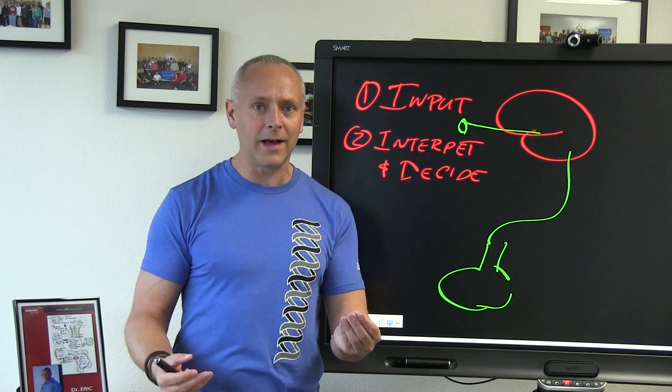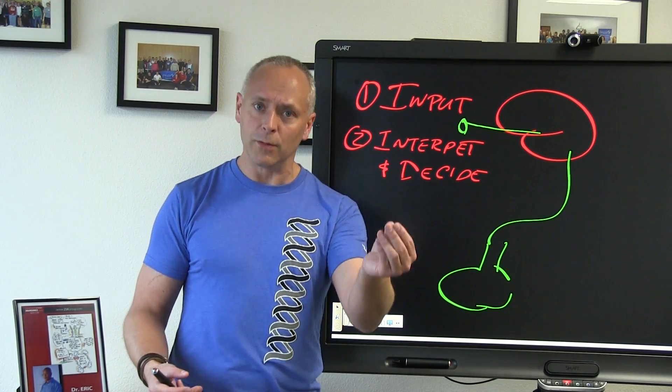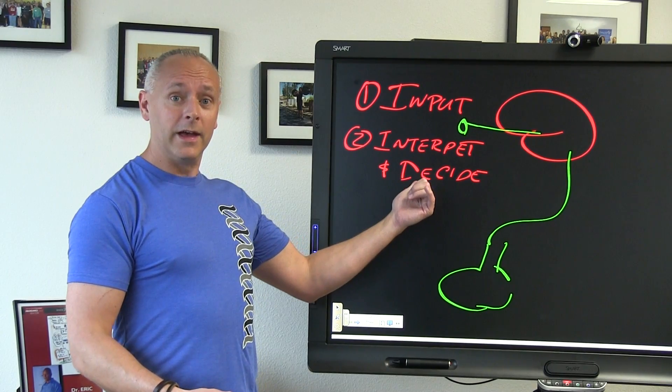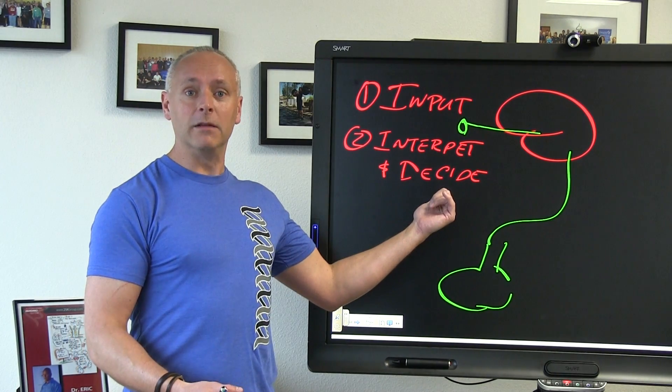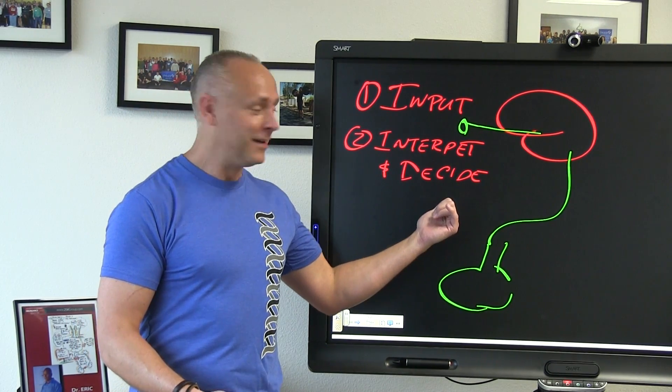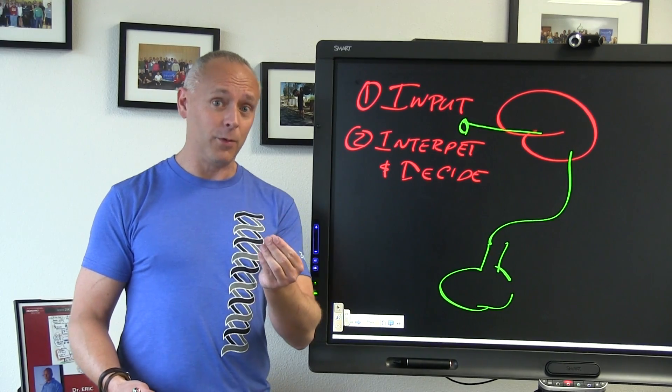First of all, the signal I'm getting from my eyes, is that the color blue? Is it the color red? That's the interpretation. Does that matter? Oh, it's a stop sign. Yeah, it actually matters. The decision part is very important.